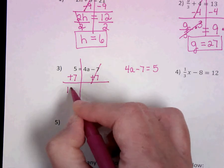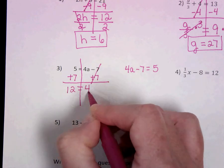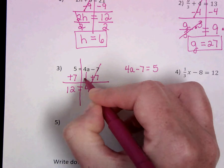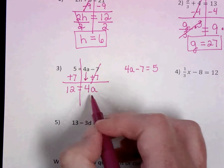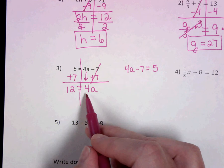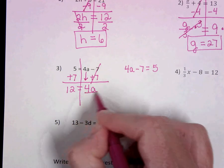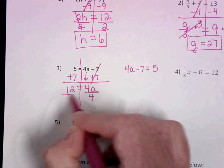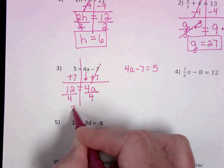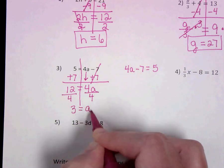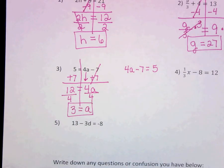We have 12 equals 4A. Remember to bring this down. Now we need to cancel out the 4. This is 4 times A. So we're going to divide by 4. 12 divided by 4 is 3. A equals 3.